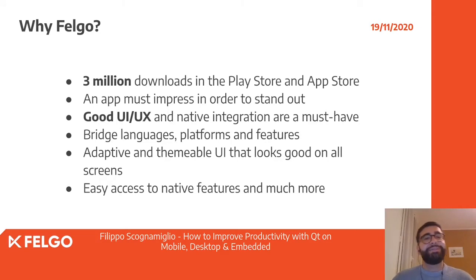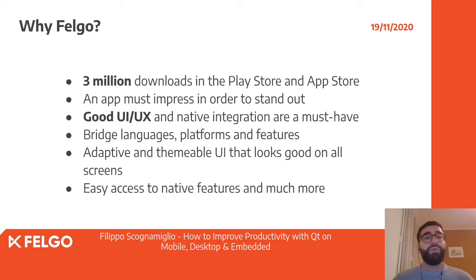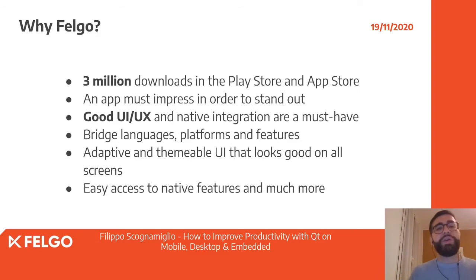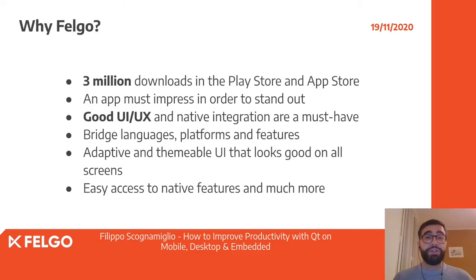Felgo has more than three million downloads on the Play Store and Apple App Store. The idea is that out of the box you should be able to create outstanding UI and UX experiences for your users without much fiddling into the details of Qt or native code. Everything should work out of the box as much as possible, and the UI should be adaptive and themable so that you can create your own branded version of the toolkit. We also aim to provide access to native features provided by Google or Apple platforms.